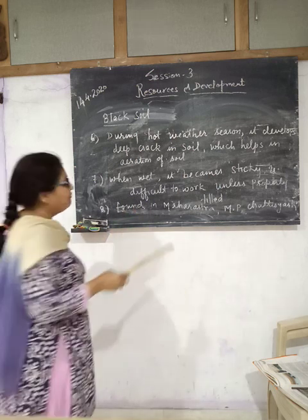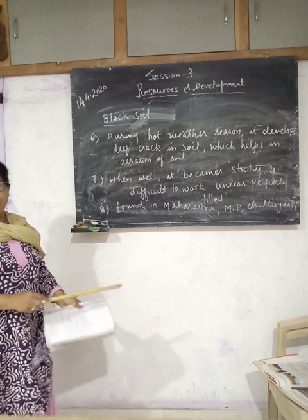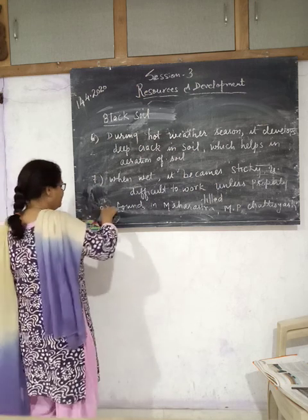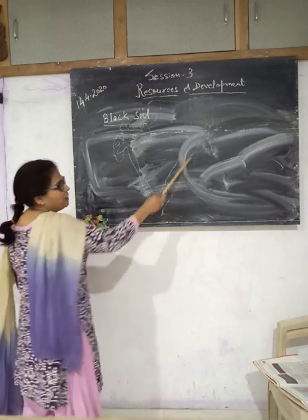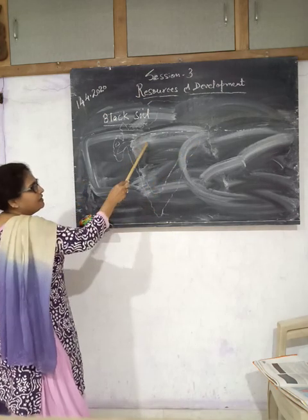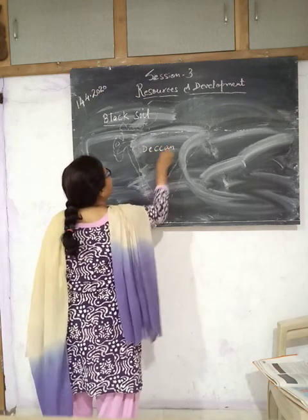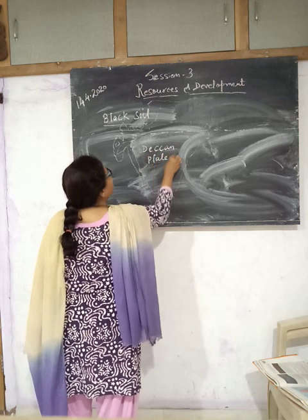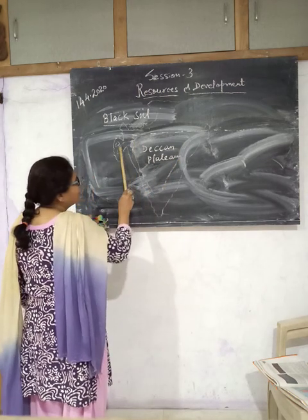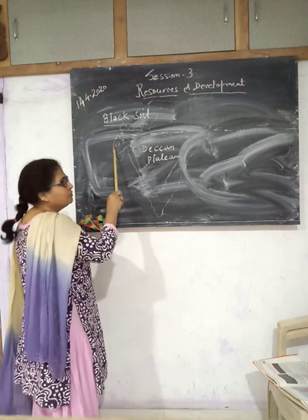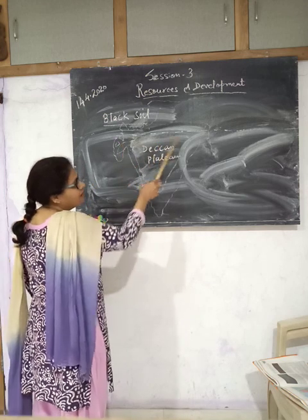This type of soil is found in Maharashtra, Madhya Pradesh, and Chhattisgarh. With the help of a map, it will be more clear. This is the peninsula part and this is the Deccan plateau. In this part, black soil is found. The areas where black soil deposits are found include Madhya Pradesh, Maharashtra, Saurashtra, Chhattisgarh, and Malwa.